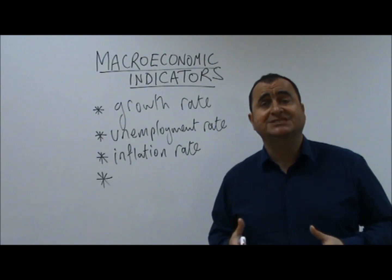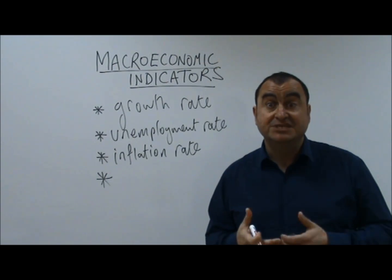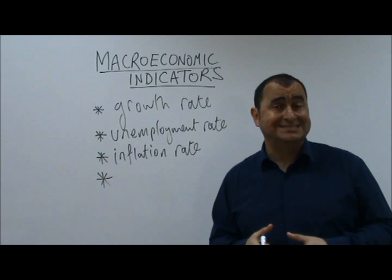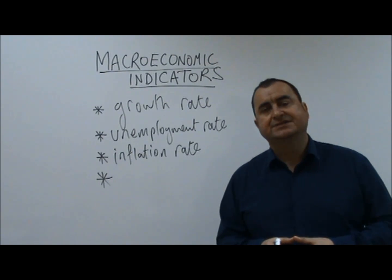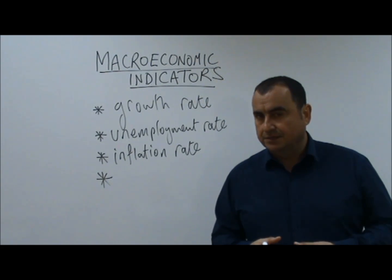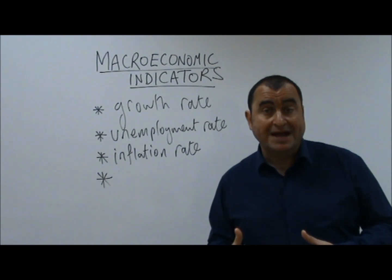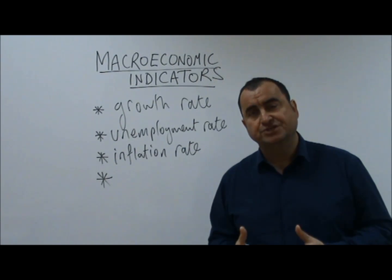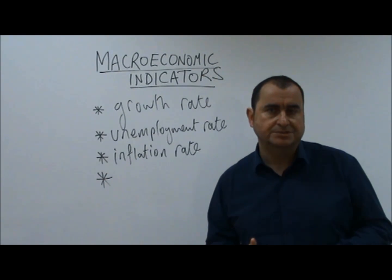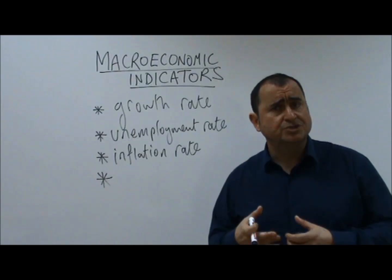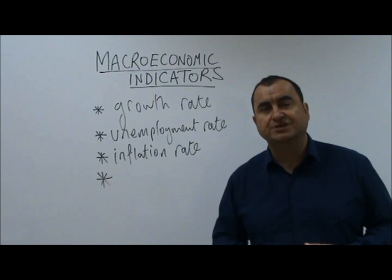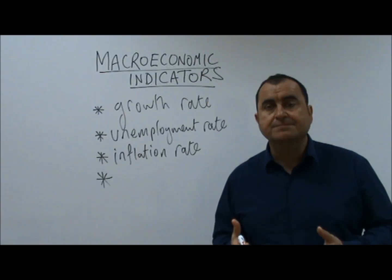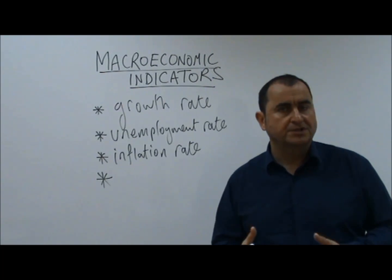the Eurozone — those 19 countries with the Euro — actually has deflation, where prices are falling at an average rate of 0.5% per year. That is deemed undesirable. Just this week, the European Central Bank has taken action to stimulate the economy. They were alerted to this problem by the macroeconomic indicator of inflation, which showed that the average price level was falling.